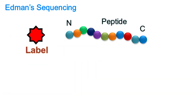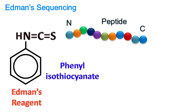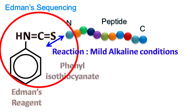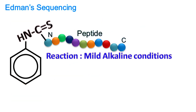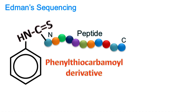The labeling of the N-terminal amino acid is done by the reagent called phenylthioisocyanate, also known as Edman's reagent. The reaction between Edman's reagent and the N-terminal amino acid is done in mild alkaline conditions, and this reaction gives rise to a phenylthiocarbamyl derivative.